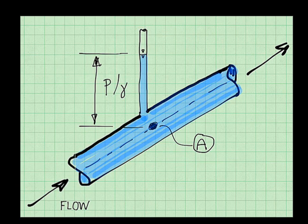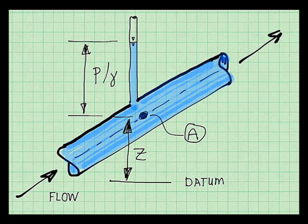A piezometer is a simple round tube with an open end that's connected to the pipe. Pressure in the fluid literally pushes the water up this tube. And this height here, which is called the column height, is exactly equal. This height will equal the pressure divided by the specific weight of the liquid flowing in the pipe.